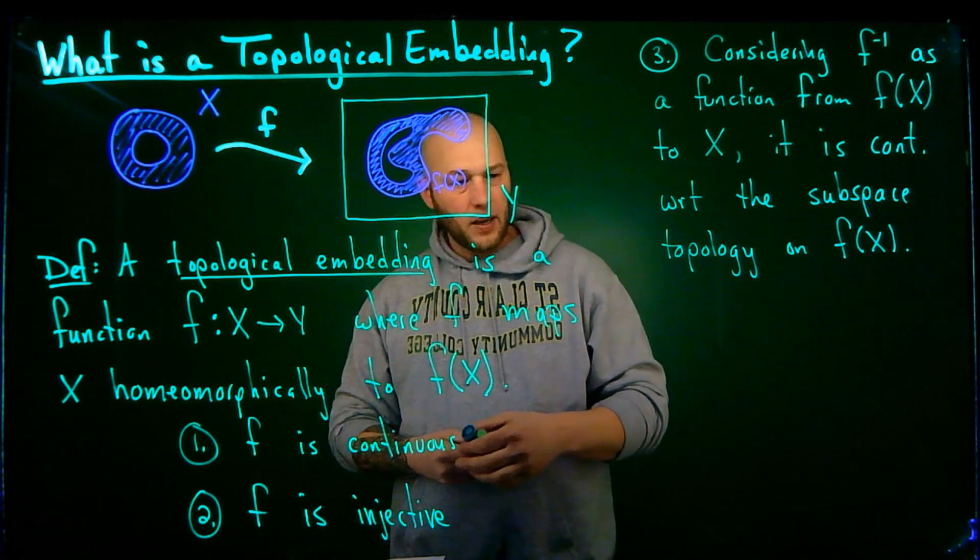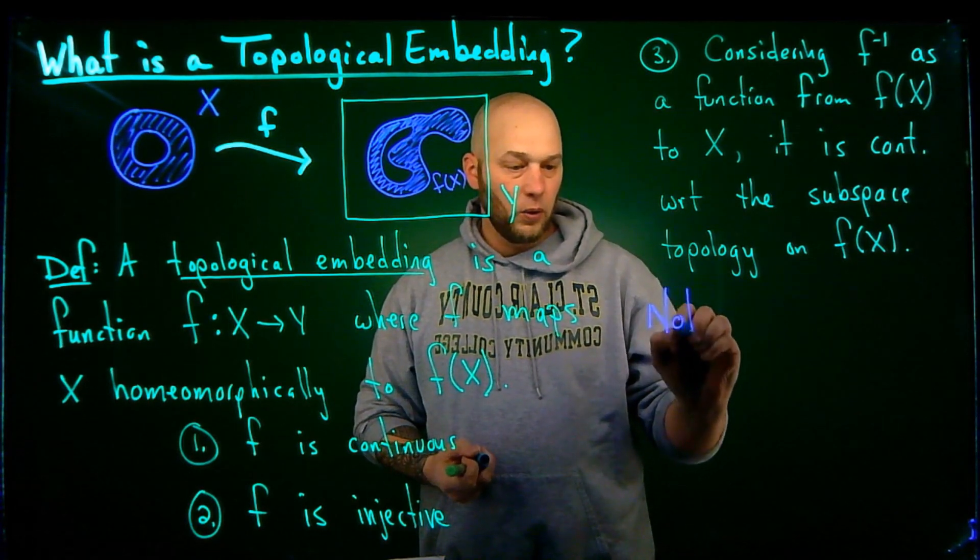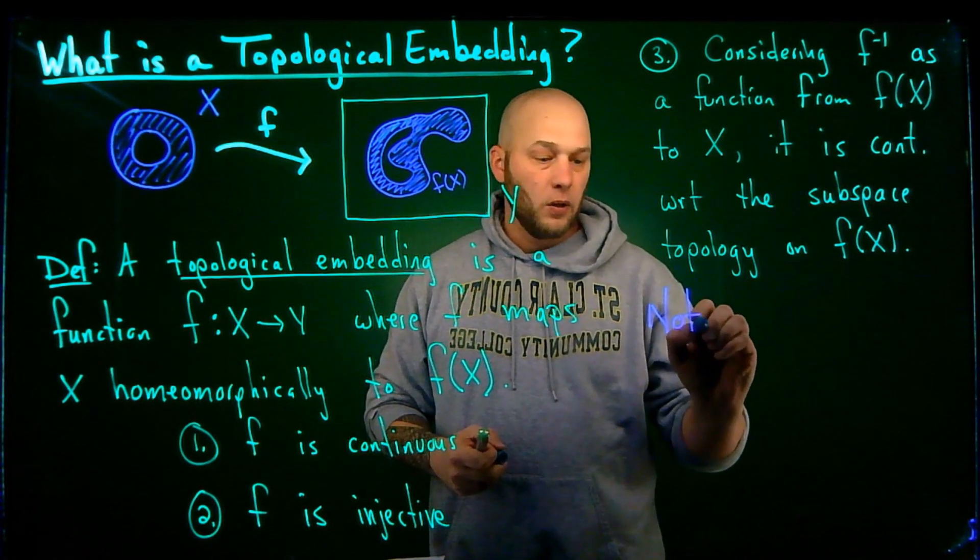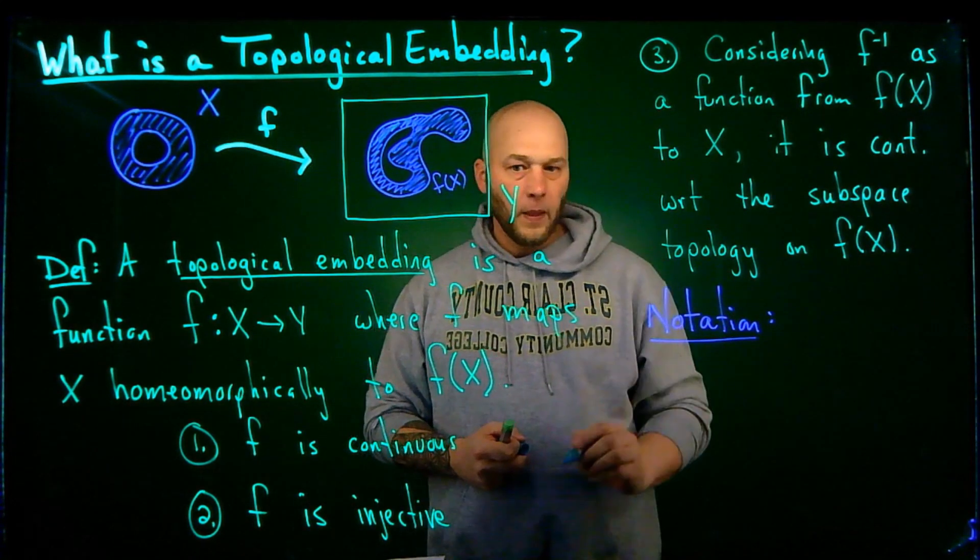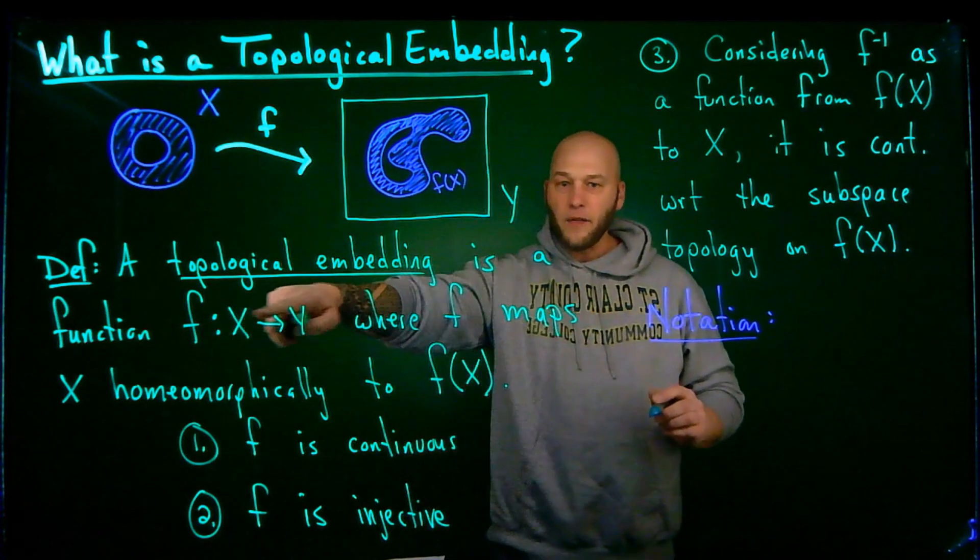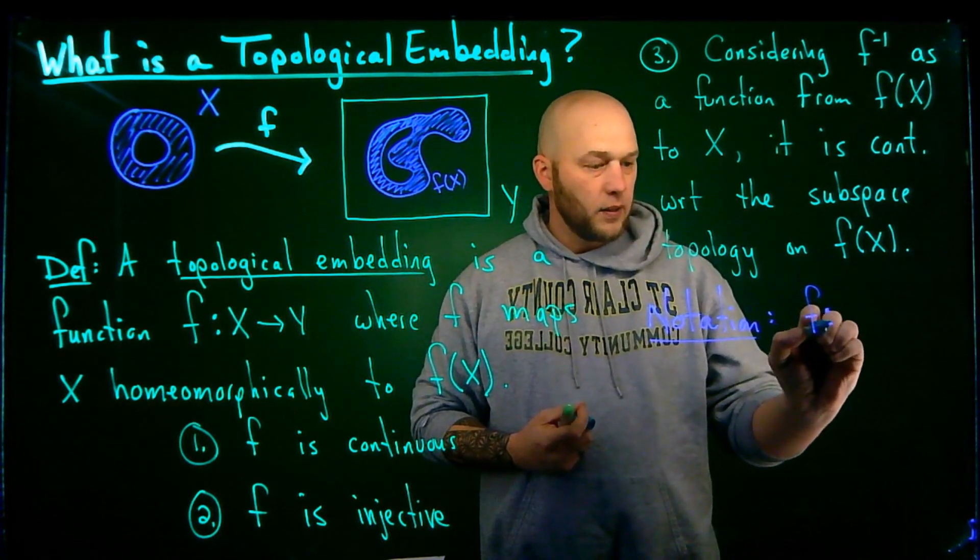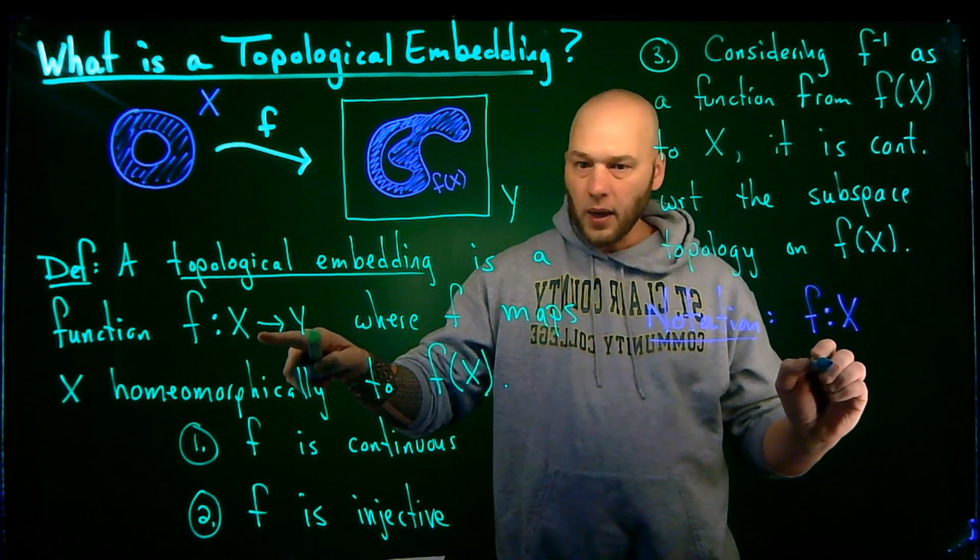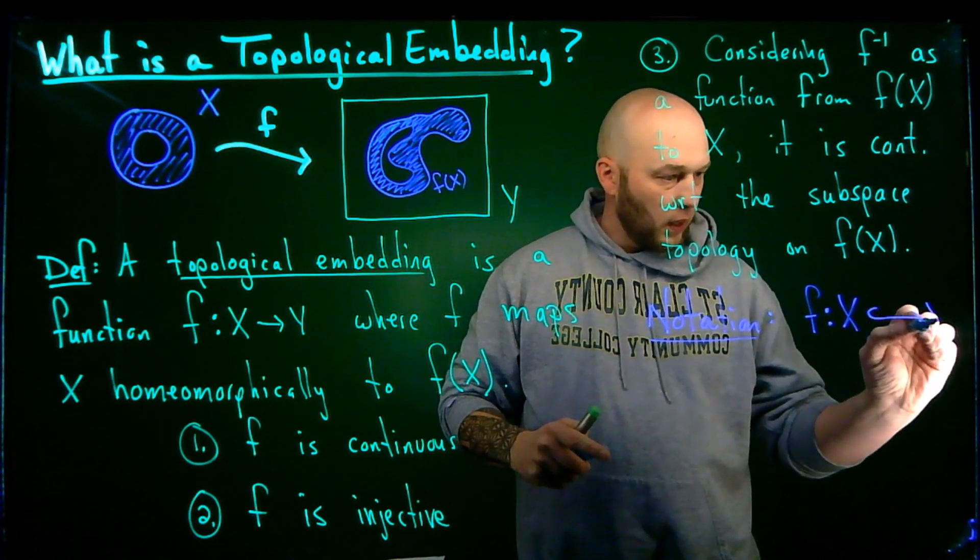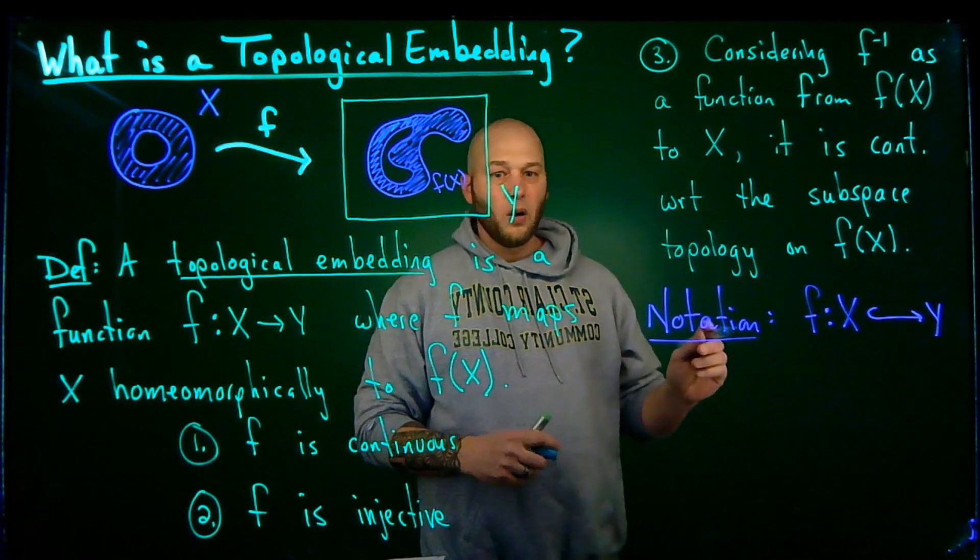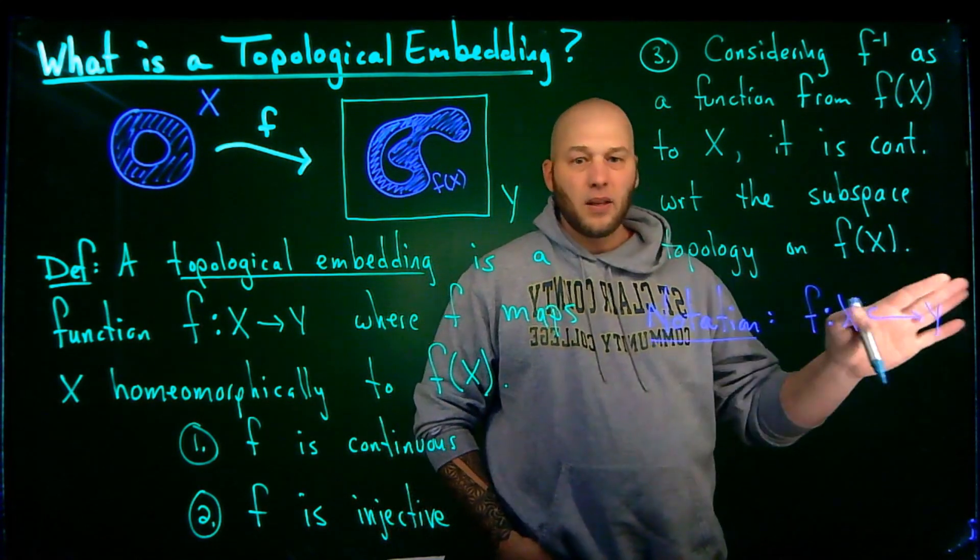Now let's go ahead and take a look at some of the notation for this, and then I'll do a couple examples. So notation. If this function F is an embedding, sometimes we will write this as F takes X, and rather than using this arrow right here, I put a little hook on the end and write it like this. So this right here would notate that F takes X and embeds it into Y.